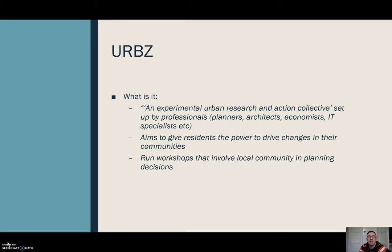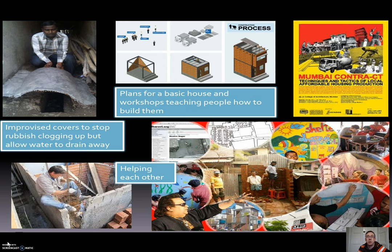An example of how this is changing is a project called URBZ — an experimental urban research and action collective set up by professionals such as planners and architects that aims to give residents the power to drive change in their communities. They run workshops to drive planning decisions and equip people with skills to improve their area. Examples of what they do include improvised covers to stop rubbish clogging up drains while allowing water to still freely flow, plans to ensure basic set structures for housing along with improved materials for higher quality, bringing the local community together to use everybody's skills to help build homes, and expanding that out to provide healthcare and education in these areas.